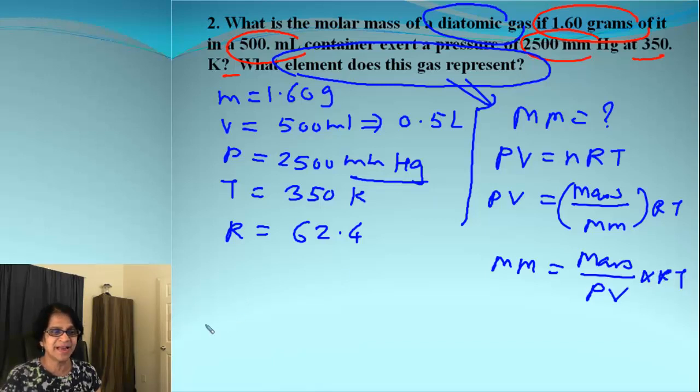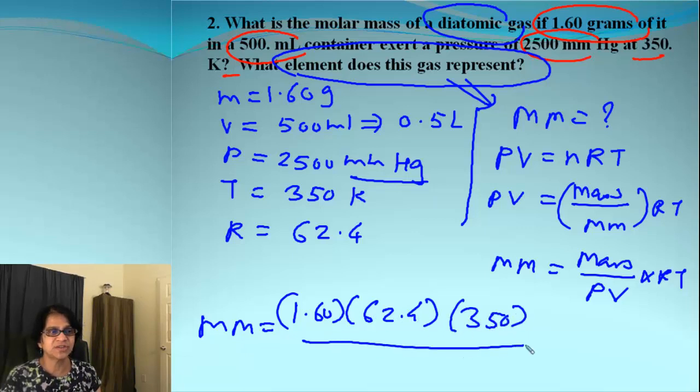And now it is simply plug and chug. So 1.6. And we have R value, which is 62.4 times temperature is 350 divided by pressure and that times volume. And what do we get when we solve? We end up getting 28 as the answer.